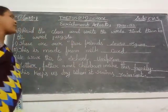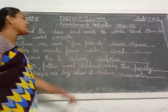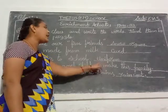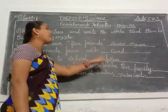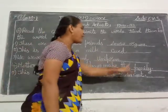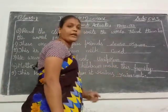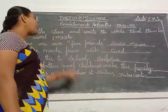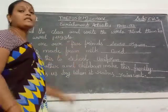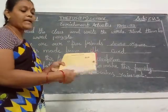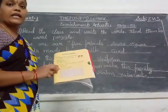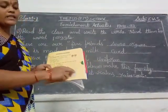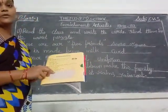Okay children — first one: sense organs. Second one: curd. Third one: uniform. Fourth one: family. Fifth one: raincoat. Take your pencils and complete these blanks, and circle the words in this word puzzle also.